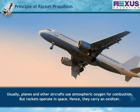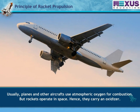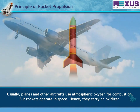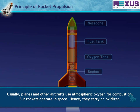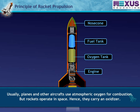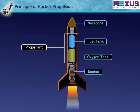Planes and other aircraft use atmospheric oxygen for combustion, but rockets operate in space, hence they carry an oxidizer. The mixture of oxidizer and fuel is called propellant. The oxidizer releases oxygen that combines with the fuel to produce gas for propulsion.